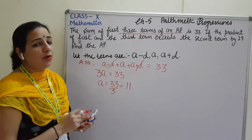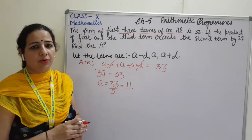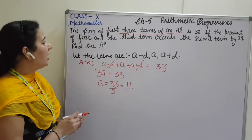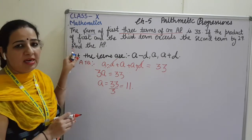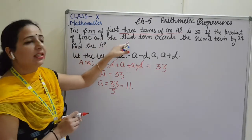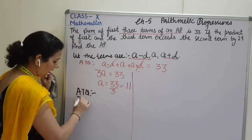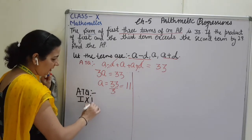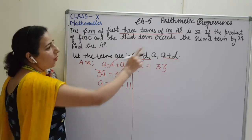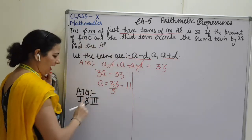Fine. Now, the next information, they can change according to the question. Here, they have given, if the product of—product means multiplied—first and the third term. According to second condition, first term into third term, product of first and third, I have multiplied them.